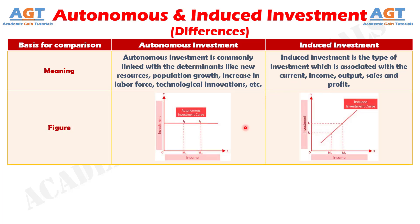Difference Number 2: In the case of autonomous investment, the quantum of investment remains the same at every income level. On the other hand, as we can see in the figure, as the income level increases from M1 to M2, the investment amount also shifts from I1 to I2, denoting that the investment is positively related to the level of income. Therefore, the curve is upward sloping towards the right, meaning induced investment is income elastic — when the income level is high, investment will also increase.